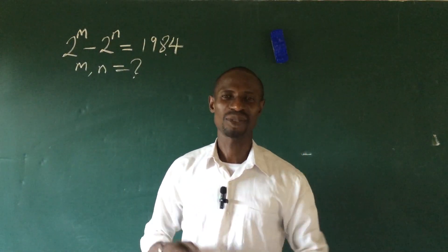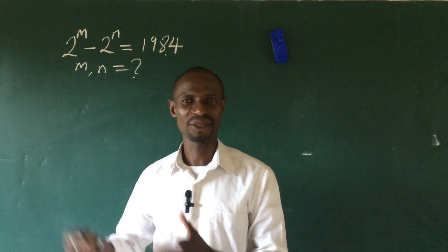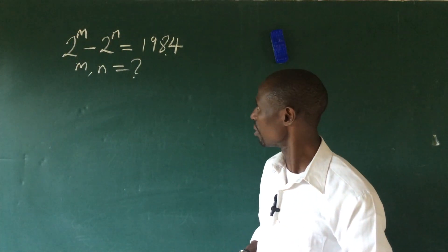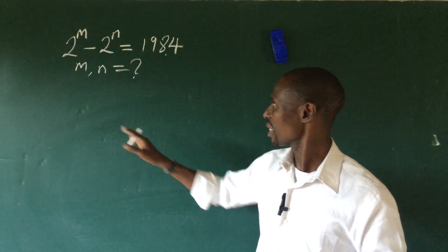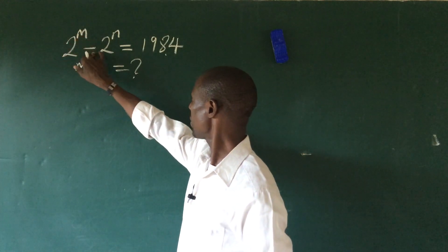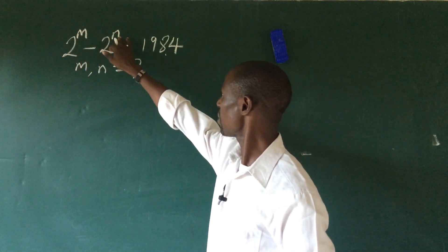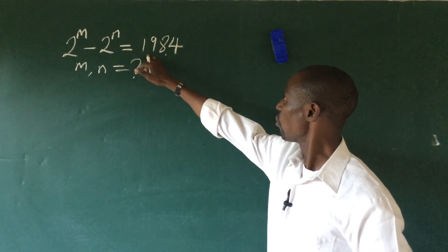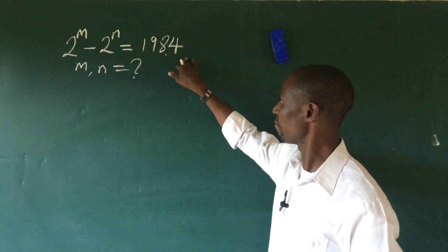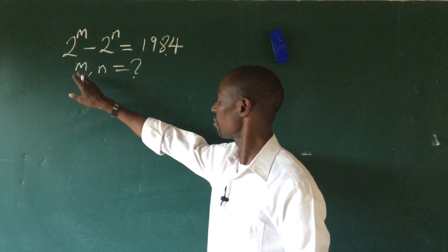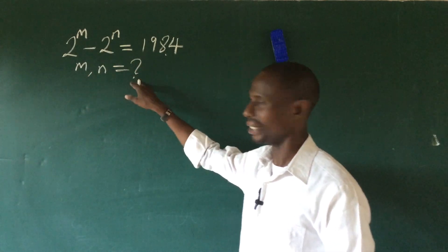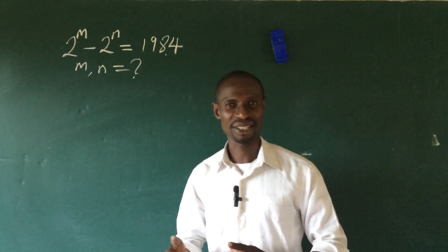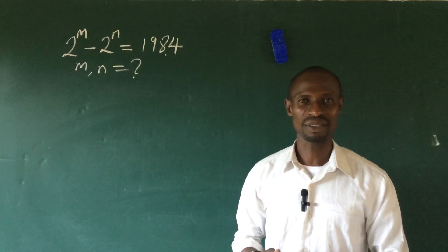Hello everyone, welcome to Online Math TV. Today we have a challenge on the board. The question says 2 to the power of m minus 2 to the power of n equals 1984. What will be the possible value of m and n? If you're new here, kindly subscribe and when you subscribe, do not forget to turn on the bell notification button.